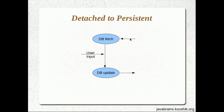Let's take this example. I have fetched an object from the database and used it to render a page or screen to the user. Now the user is going to look at the screen, react to it, and enter some inputs. What I need to do is take the user inputs and then update the record back to the database. It's a very common scenario. So I'm getting the data, displaying it to the user, and then updating the data with the user inputs and sending it back.